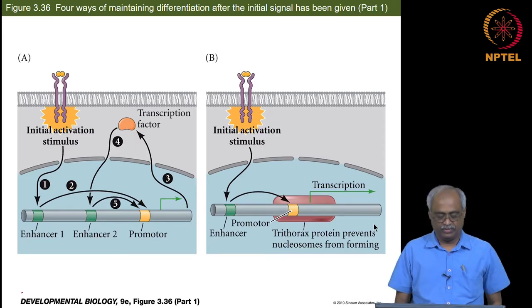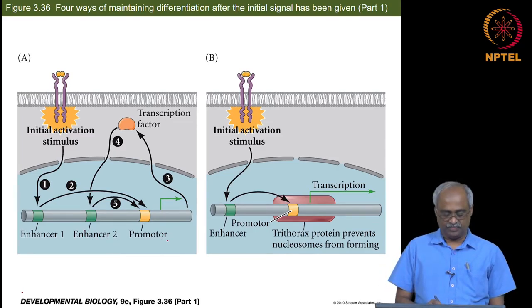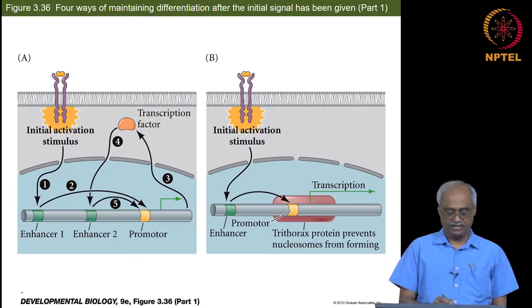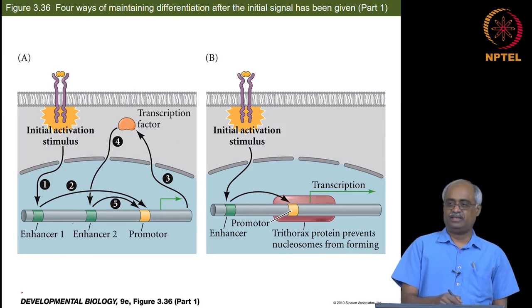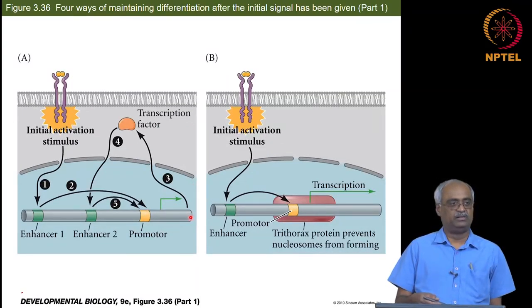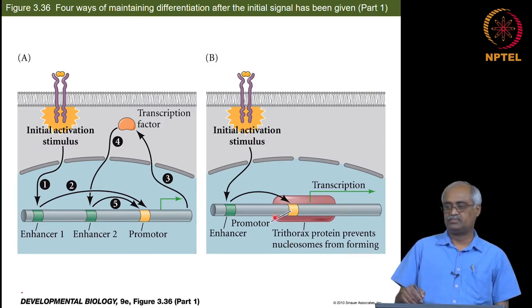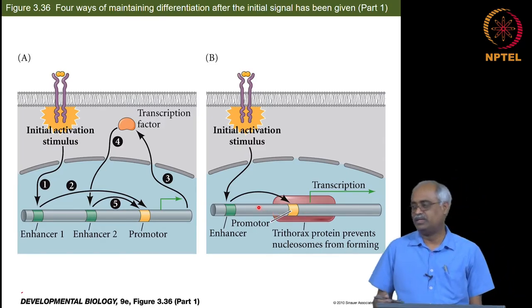There are four different mechanisms by which this happens. In one situation, once activated, that particular transcription factor may bind to another enhancer and continue to activate transcription — the product itself is an activator. There could be multiple targets activated; one of them may be an activator, and that product goes and binds via another enhancer to continue activating that gene.